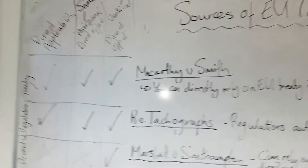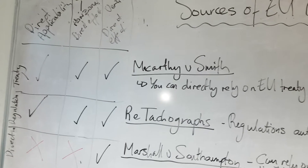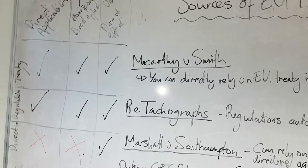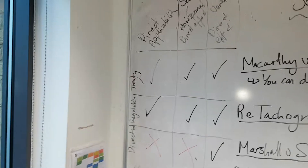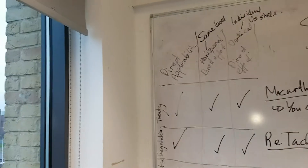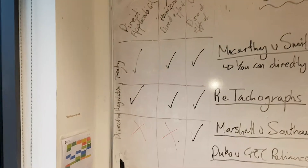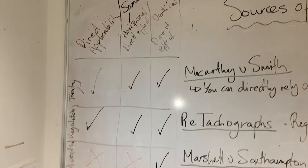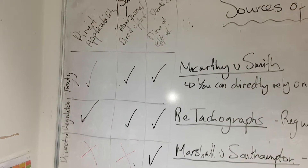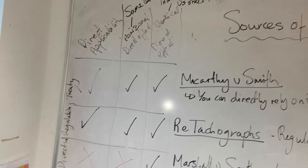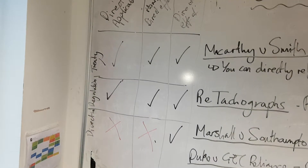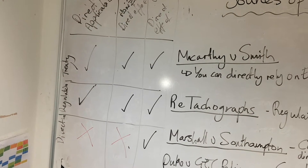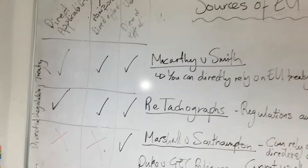We also need to look at what direct applicability and direct effect are. Direct applicability means that treaties and regulations have direct applicability — a member state doesn't need to bring this law into their own law, it automatically comes across. Directives, however, do not have direct applicability.